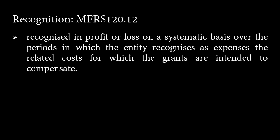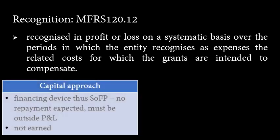However, both approaches are acceptable. The proponent of the capital approach argues that government grant is a financing device, thus it should be dealt with as such in the statement of financial position rather than be recognized in profit or loss to offset the items of expense that they finance. And because no repayment is expected, such grants should be recognized outside profit or loss. They also argue that it is inappropriate to recognize government grants in profit or loss because they are not earned, but represent an incentive provided by governments without related costs.